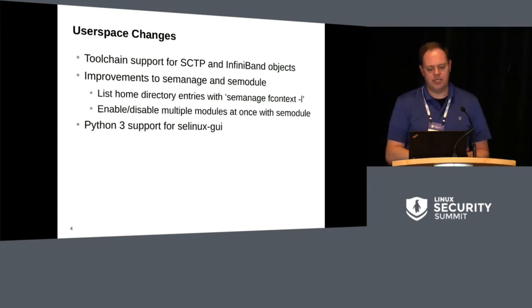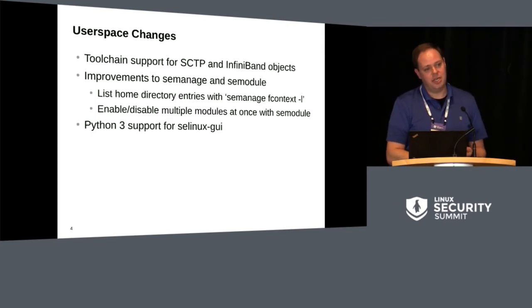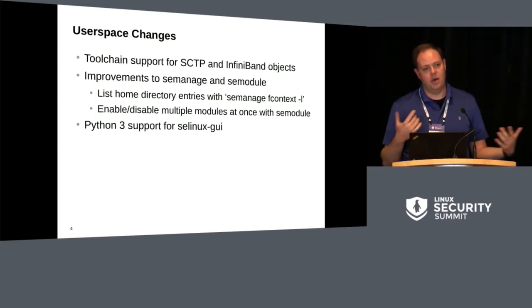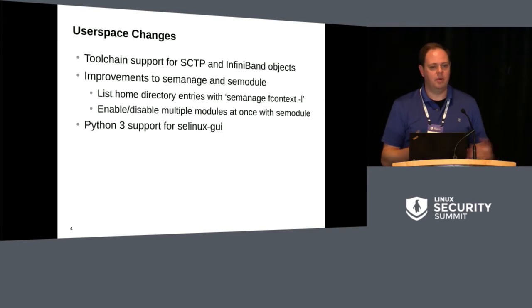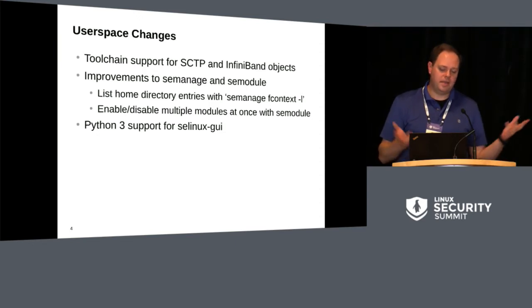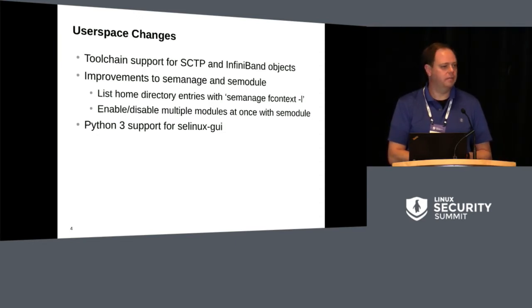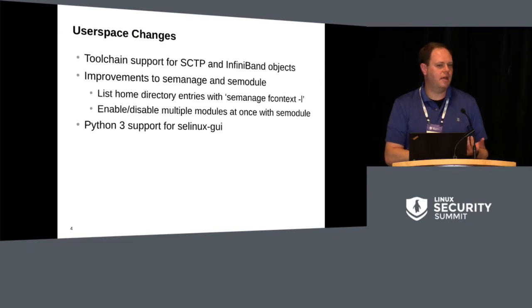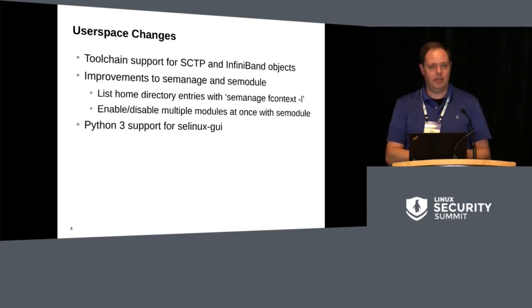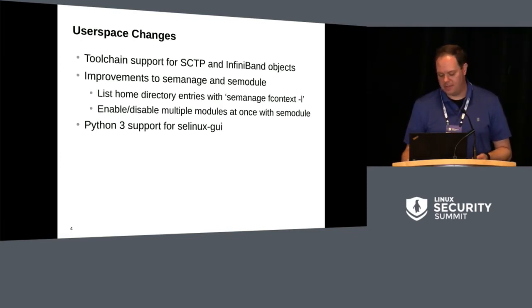We've also got some smaller incremental changes elsewhere. Some of the bigger ones are changes to SEManage and SEModule. SEManage will allow you to see the home directory context with fcontext. You can enable and disable multiple SELinux policy modules at once using SEManage. And we've got Python 3 support for the SELinux GUI command. We're getting very close to everything being Python 3 supported — we're slowly marching away from Python 2.